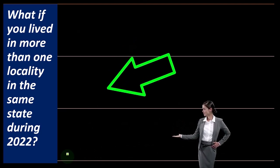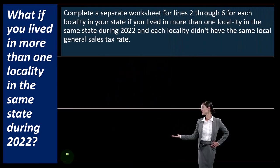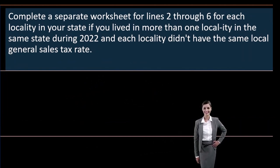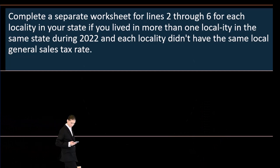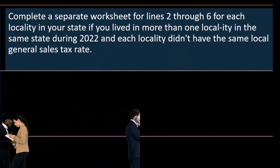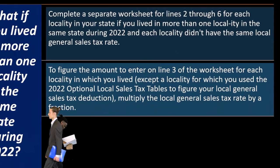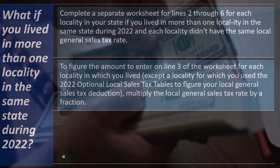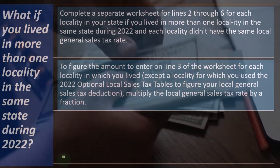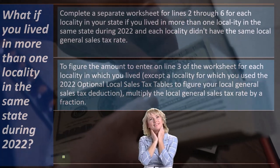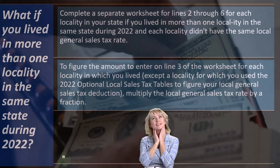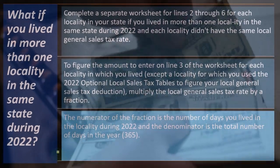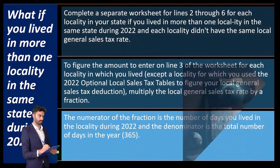What if you lived in more than one locality in the same state during 2022? Complete a separate worksheet for lines two through six for each locality. If each locality didn't have the same local general sales tax rate, figure the amount to enter on line three for each locality by multiplying the local general sales tax rate by a fraction: the numerator is the number of days you lived in that locality during 2022, and the denominator is 365.